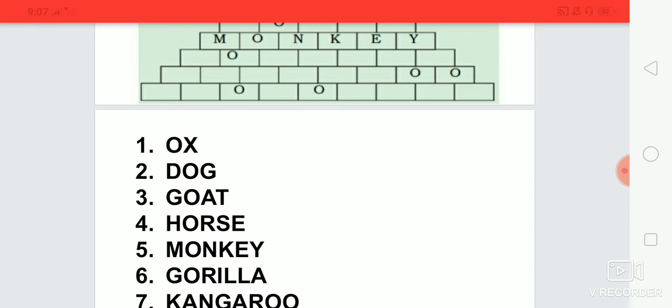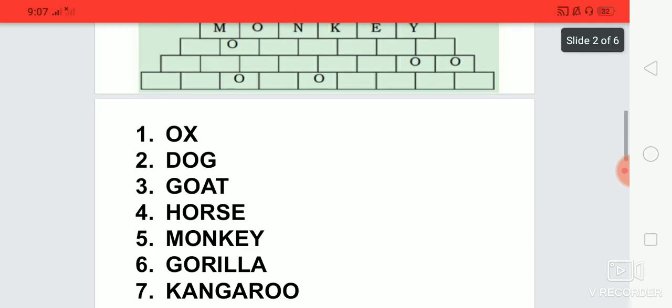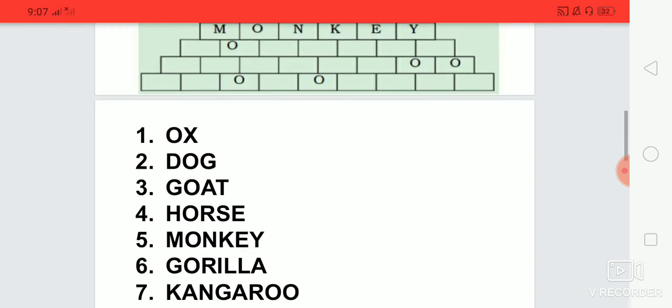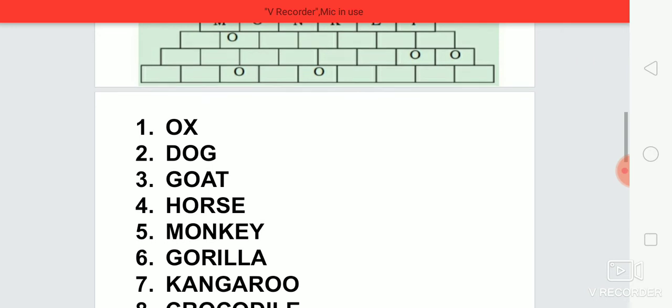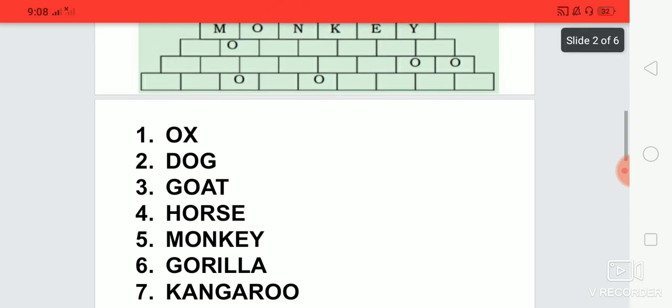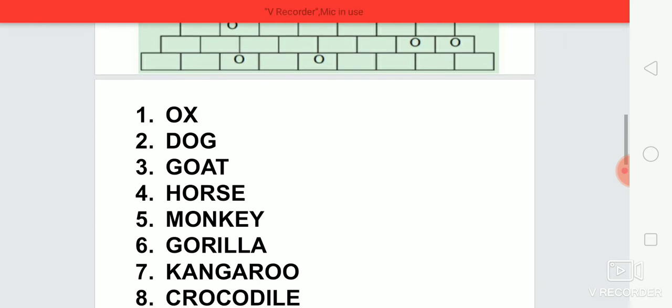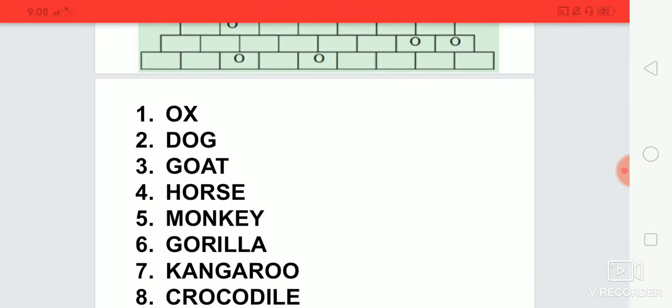Next, write down kangaroo. Third box they have completed, last two boxes in the seventh row. That is, they wrote O-O. You wrote K-A-N-G-A-R. Next, in the eighth row, what we can write? We can write crocodile, C-R, third box they only completed, that is O. After O, write down C, again after O, write down D-I-L-E, crocodile.